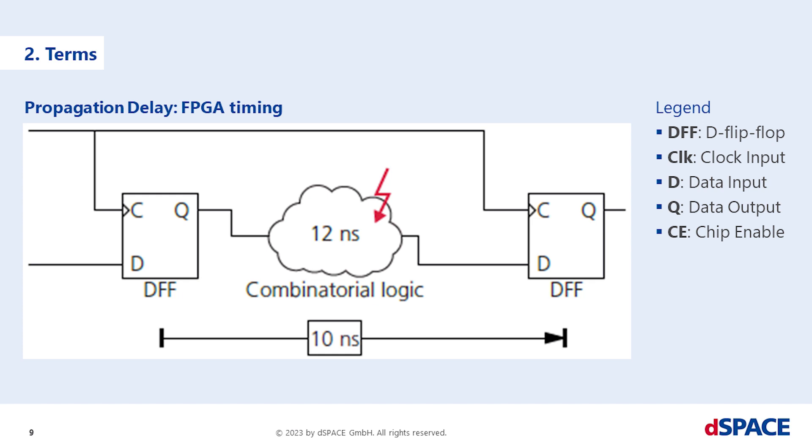In the following example, the clock period is 10 ns while the combinatorial logic needs 12 ns to propagate the signal. For a reliable transmission, the data signal must reach the data input of the receiving flip-flops early enough and with a stable signal level.